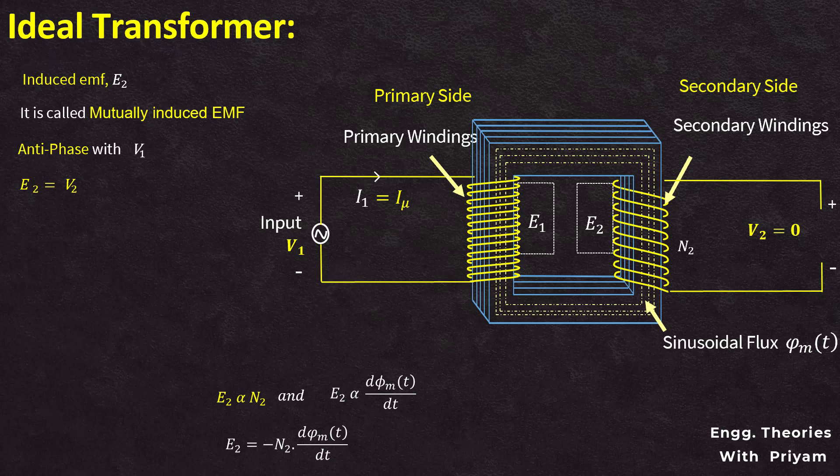The relationship between the flux phi_mt and both EMFs is that both e1 and e2 lag the alternating flux phi_mt by an angle of 90 degrees. This alternating flux phi_mt is common to both windings — primary and secondary — as the flux links with both windings, inducing EMF in each respectively. Both EMFs e1 and e2 are in phase with each other.